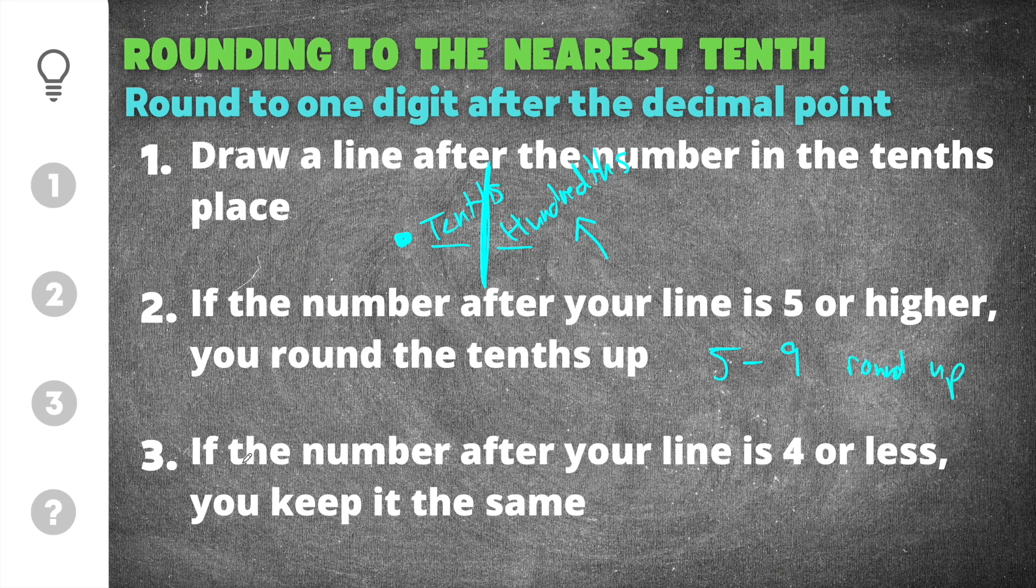The third thing we need to know is that if the number after your line is four or less, so that would be zero to four, you keep it the same. So that means you keep it the same, so it stays the same.